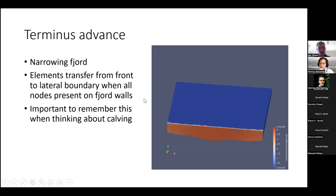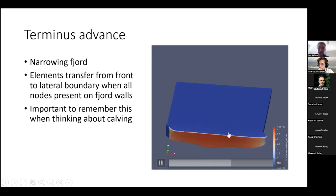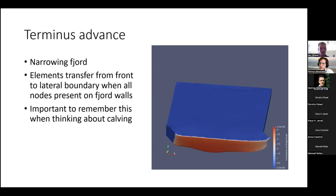Here's another case showing what happens with a narrowing fjord — the glacier is flowing towards you and the fjord turns right. The terminus advance variable is only present on the front boundary, and you'll see the elements as they reach the fjord boundary being transferred from the front boundary to the lateral boundary. This is really important for calving because it's the lateral boundary that provides support to suppress calving through a compressive arch.